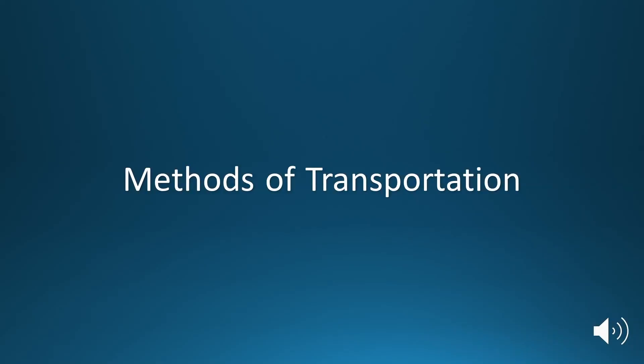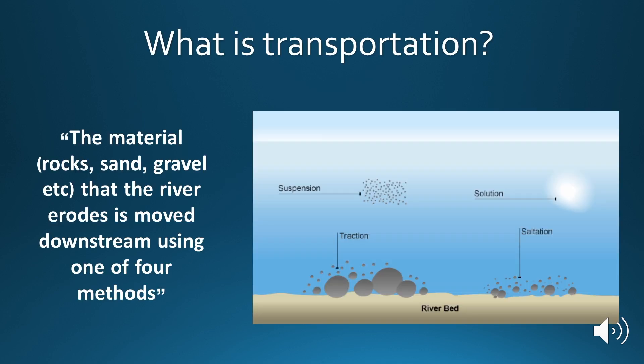Hi there, today we're going to be talking about the different methods of transportation that a river channel can undertake to move sediments around. At all times, the river is either eroding or depositing sediment, and this is dependent on the amount of energy that the river has. This material is moved by the river using one of four different methods dependent on the particle size.